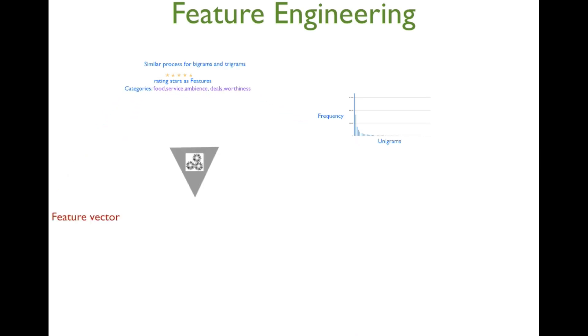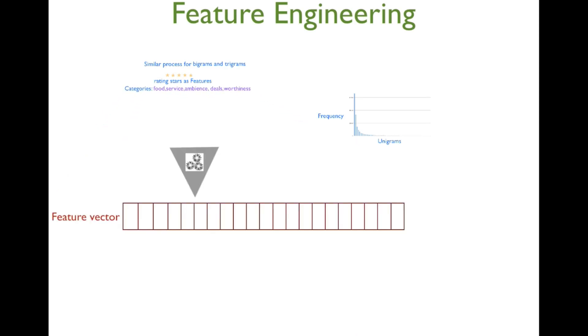All these features were designed to be binary features. In the end, we had a total of 676 features which consisted of unigrams, bigrams, trigrams, and star ratings.